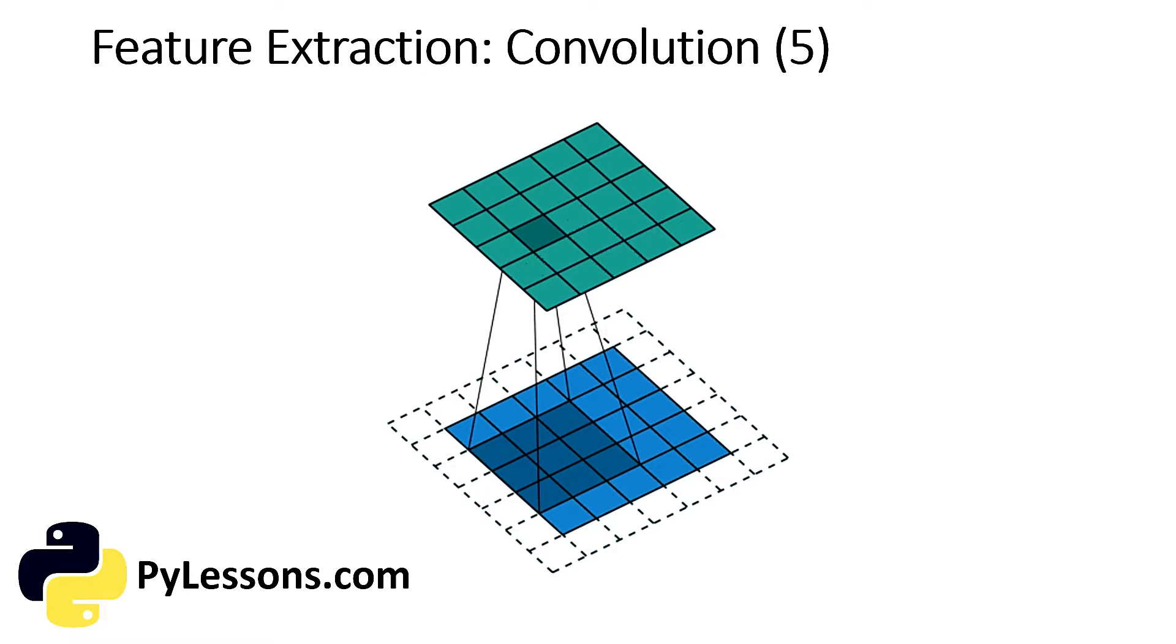Another thing I should mention is that there are two types of results from the operation. One in which the convolutional feature is reduced in dimensionality as compared to the input, and the other in which the dimensionality is either increased or remains the same. This is done by applying valid padding or same padding. In the latter case, in this example, our padding is one.